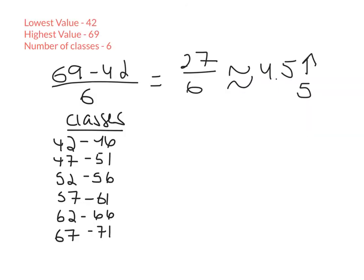Hopefully you paused it. But basically what I did is I took my highest value, which was 69. I subtract my lowest value of 42. I'm breaking it into 6 different buckets. And when you do that you get approximately 4.5, but you always have to round up to the next whole number.